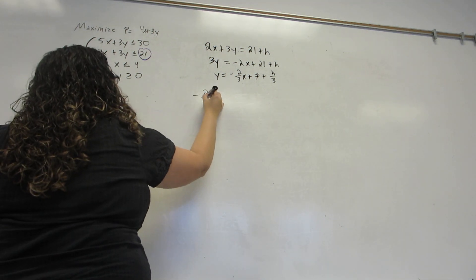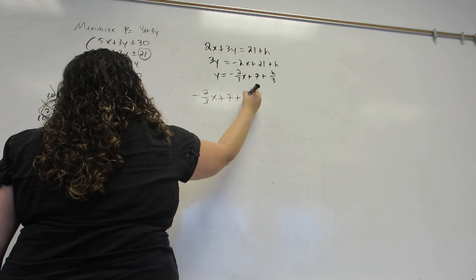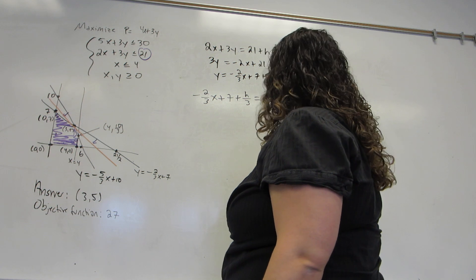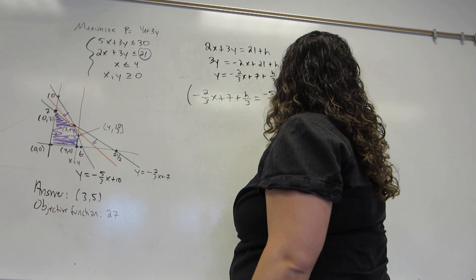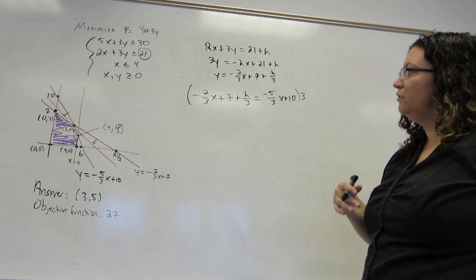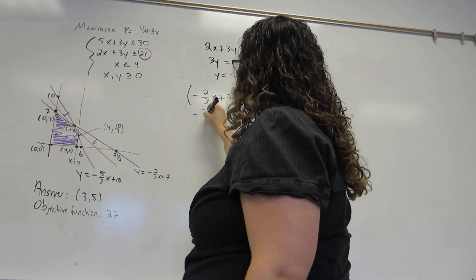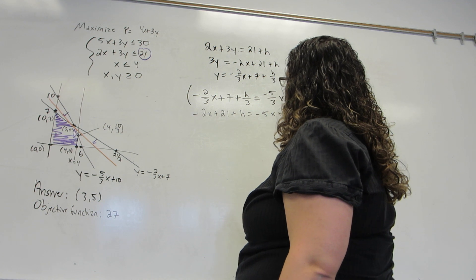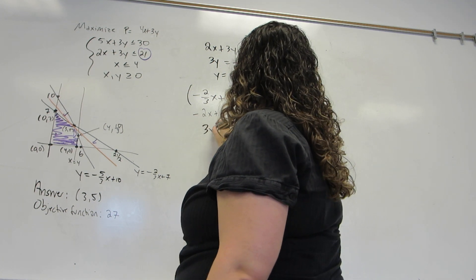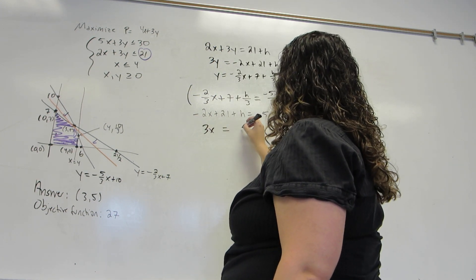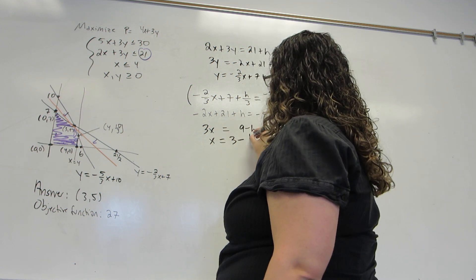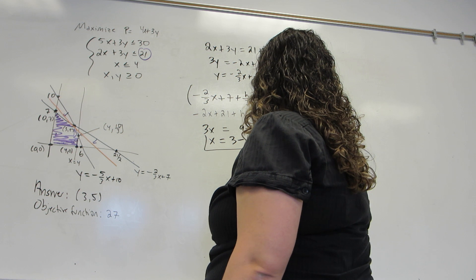So, minus 2 thirds X plus 7 plus H over 3 will be equal to minus 5 thirds X plus 10. Just as before, in order to complete this calculation, I would like to get rid of fractions. And I get that X is 3 minus H over 3.